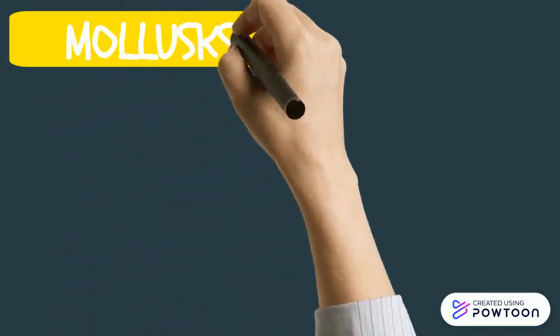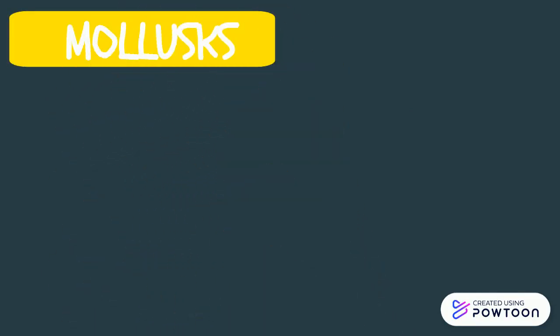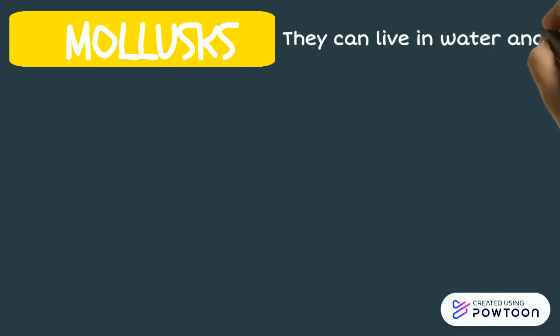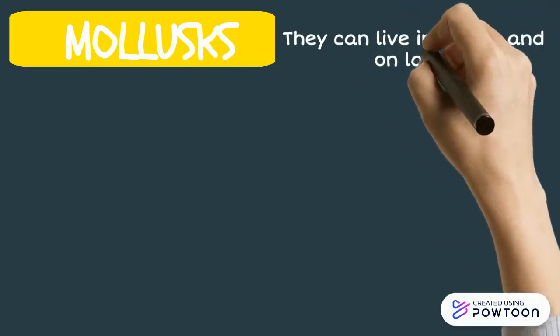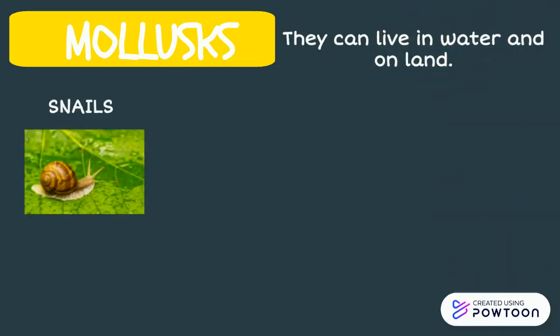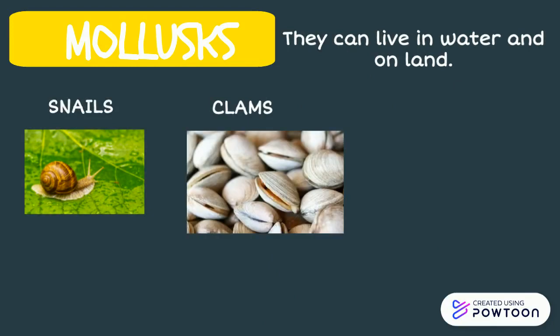Mollusks. These animals are invertebrate animals that can live in water and on land. Some examples are snails, clams, octopus, and slugs.